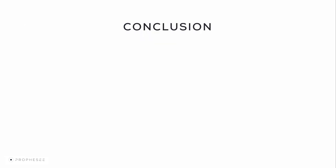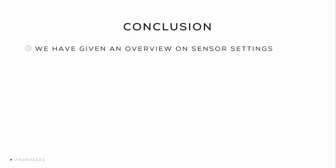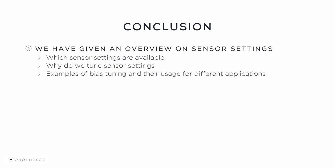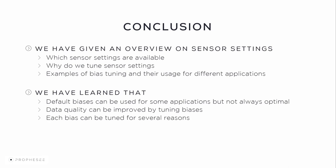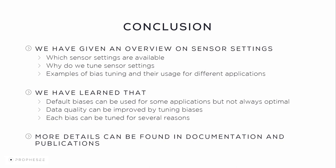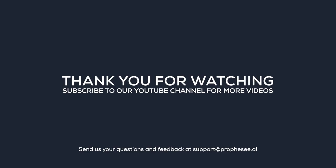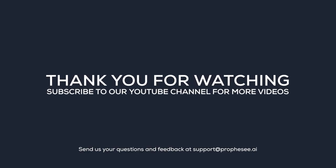In this video, we've given a general overview on the sensor settings. We've seen which sensor settings are available, why we tune specific sensor settings, the effect of bias tuning, and examples of applications. We've also learned that the default biases can be used for some applications, but they're not always optimal — data quality can be improved by bias tuning and each bias can be tuned for several reasons. More details can be found in our documentation and publications. See the useful links in the description below the video. We look forward to your feedback. Thank you for watching, and we'll see you in the next videos.